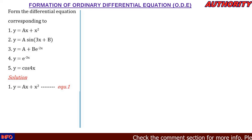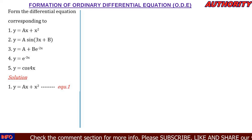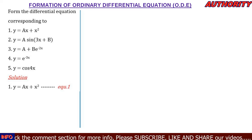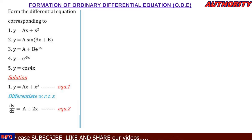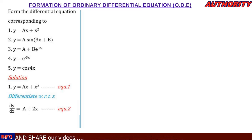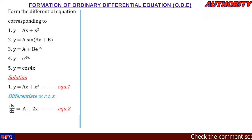We have y = ax + x², call this equation 1. Differentiating for the first time, we get dy/dx = a + 2x — differentiating ax gives a, and differentiating x² gives 2x. Call this equation 2.